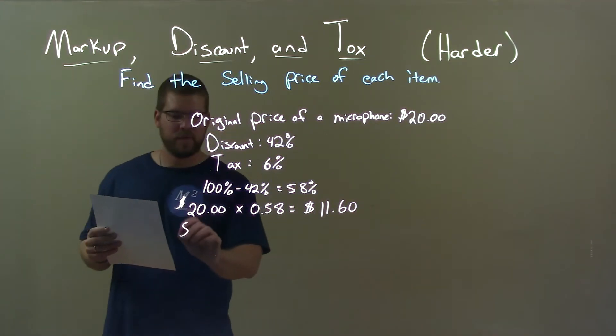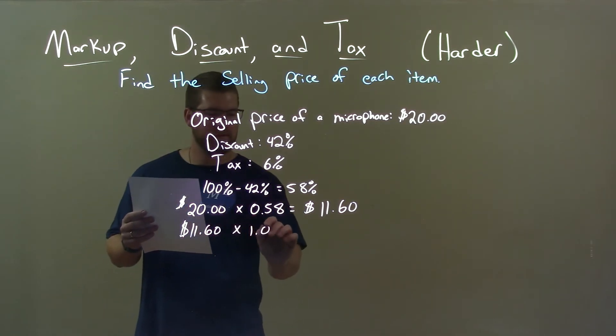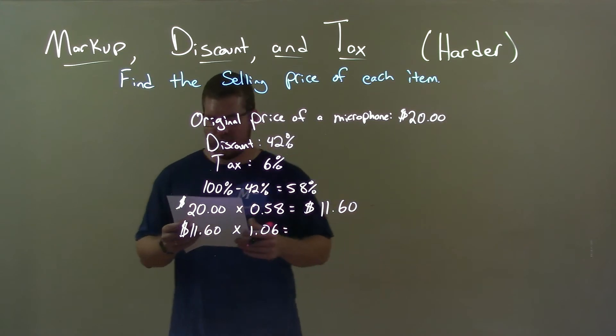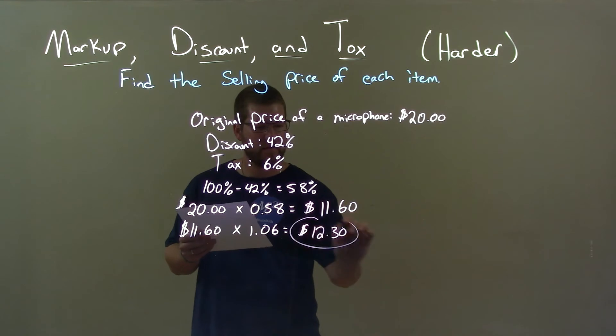Now we've calculated the tax. We take that $11.60 and multiply that by 1.06. And this gives us a final sale price of $12.30.